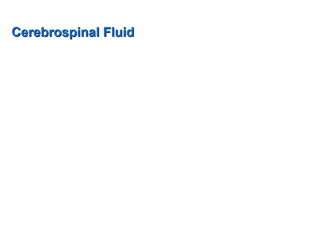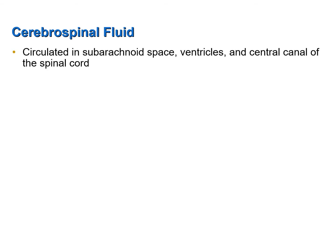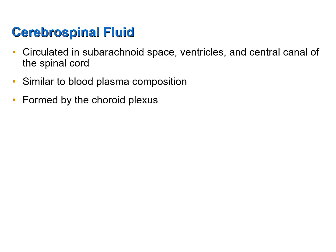Let's now discuss the cerebrospinal fluid. The cerebrospinal fluid is a fluid that fills and surrounds the brain and spinal cord. It circulates in the subarachnoid space, the ventricles of the brain, as well as the central canal of the spinal cord. It is similar in composition to blood plasma; in fact it's made from blood plasma by the choroid plexus. The cerebrospinal fluid functions to form a watery cushion to protect the brain from physical harm or trauma.